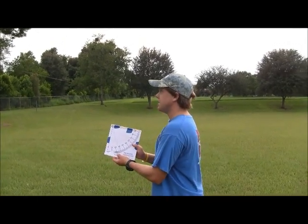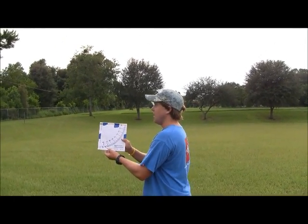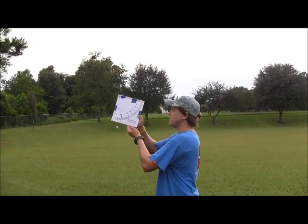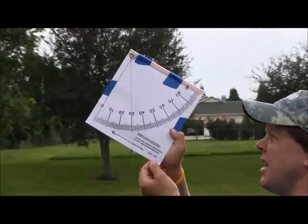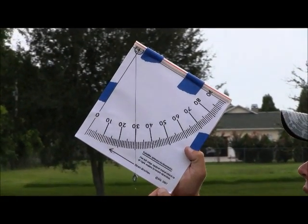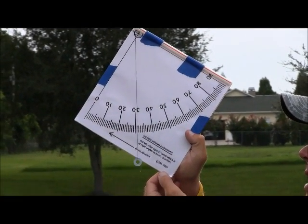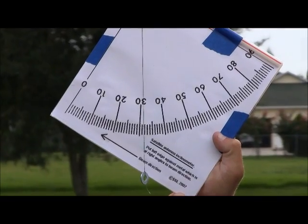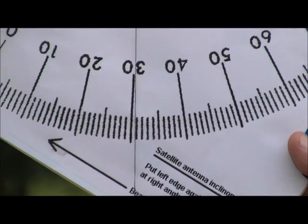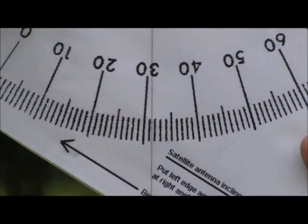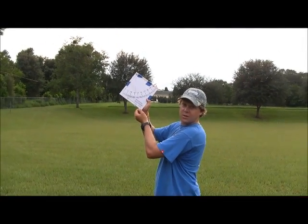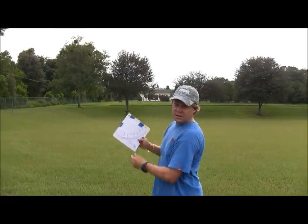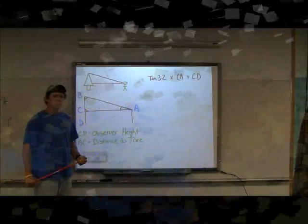So right now I am going to take this, I am going to sight it to the top of the tree, and I am going to get an angle reading on that. Jeremy, can you zoom in on that and get it real quick? 32. Alright, so we will use our distance of 60 feet and our angle of 32 to go in and figure out the height of this tree.